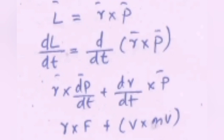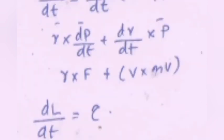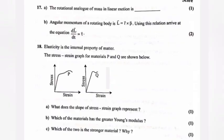Question 18: Elasticity is the internal property of matter. The stress-strain graph for materials P and Q are shown below. A: What does the slope of stress-strain graph represent? Answer: Young's modulus. B: Which of the material has the greater Young's modulus? Answer: Y equals stress by strain equals slope of the graph. Slope of the graph for P material is greater than that of Q. P material has the greater Young's modulus.